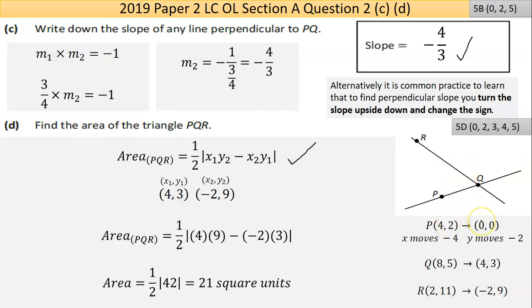I'm going to move one of them to zero zero - it's usually the way to do it. If I move one of them, the other two coordinates will move the same distance. So I'm moving the point (4,2) so it's going down 4 on the x, it's going down 2 on the y. The same thing will happen to the other two points. So the 8 goes down 4, the 5 goes down 2. On the last point, 2 goes down 4, 11 goes down 2. So I end up with these two points: (4,3) and (-2,9). I've labeled them.